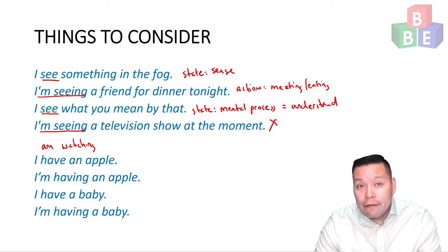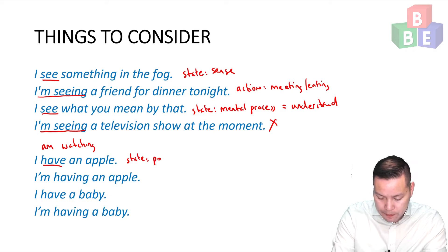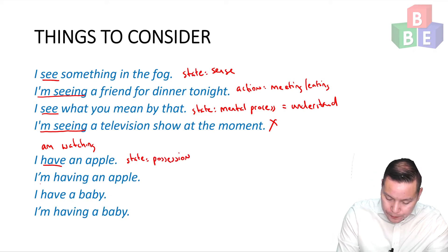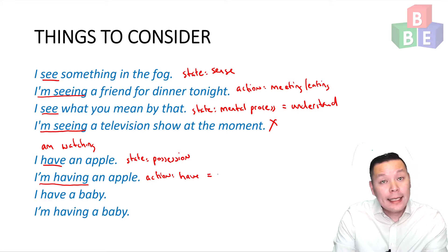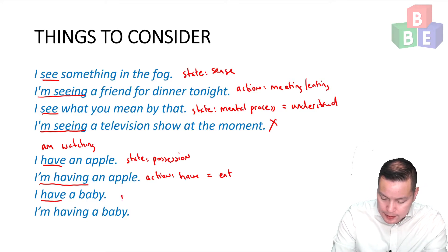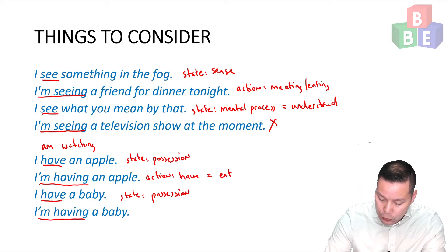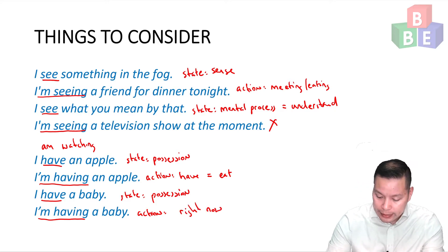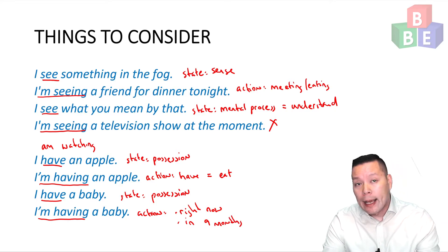Here's another example. I have an apple — state verb. I am having an apple — an action verb, because here have means eat. I have a baby — state, possession. And I am having a baby — this could have many meanings: it could mean right now in present continuous, or it could mean in nine months, or it could mean that I am pregnant.